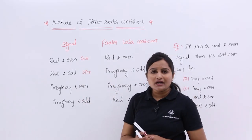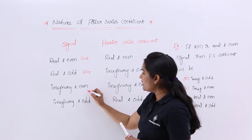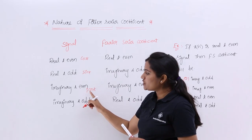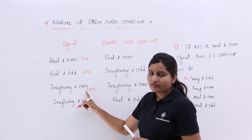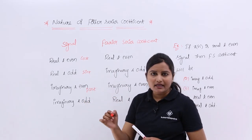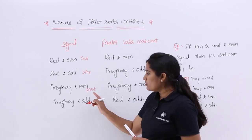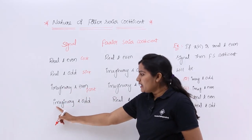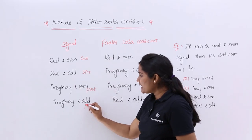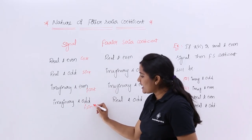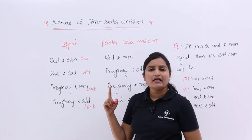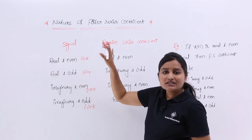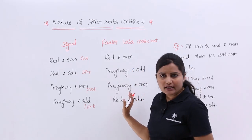Imaginary and even: i·cos(t) is the example. This is an even function but not real — it is imaginary because you have i in front of cos(t). Imaginary and odd: i·sin(t) is an example of an imaginary and odd function. If your functions are like this, the related Fourier series coefficients would be correspondingly like this.